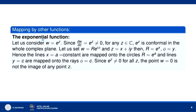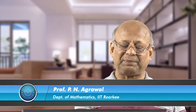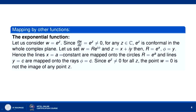Now let us discuss the mapping w equal to e^z. The exponential function w equal to e^z is a conformal mapping for all values of z in the complex plane because dw/dz equals e^z, which never vanishes. Writing w equal to r·e^(iφ) and z equal to x + iy, we get r·e^(iφ) equal to e^x · e^(iy), so r equal to e^x and φ equal to y.